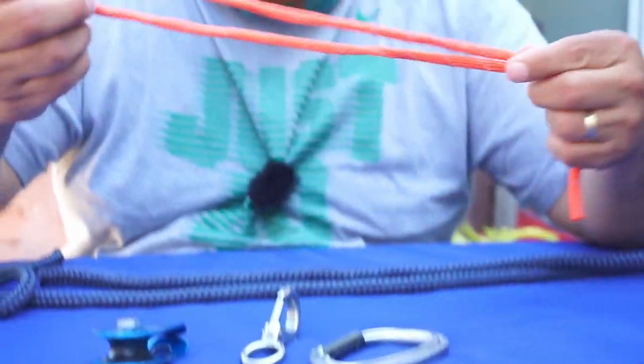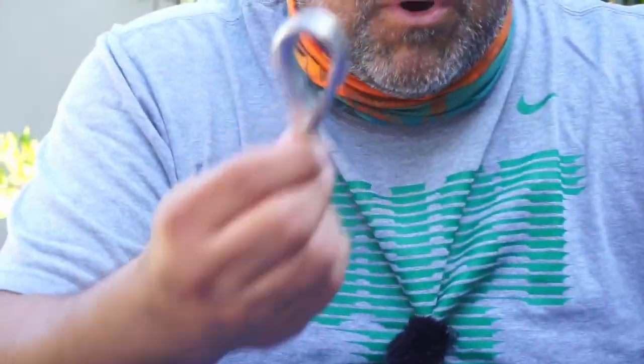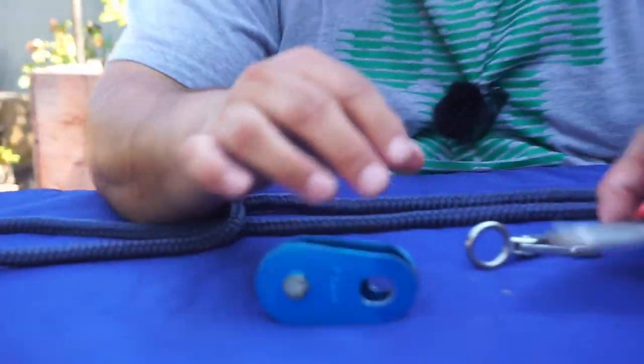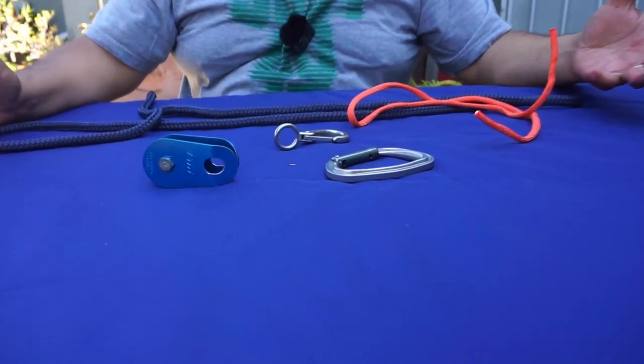This is just a piece of paracord, a fixed eye boat clip, a pulley that doesn't have to be rated, and also a clip. These are the components that you need to put this together.